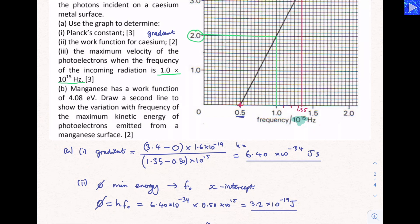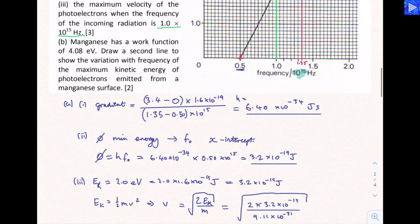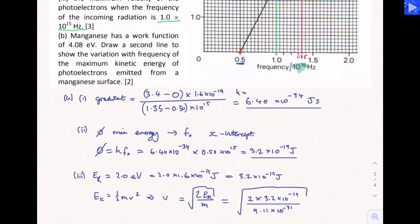We're now told that manganese has a work function of 4.08 eV. Draw a second line to show the variation with frequency of the maximum kinetic energy of photoelectrons emitted from a manganese surface. If you remember, the gradient of our line is Planck's constant. Planck's constant is, as the name suggests, constant. So the gradient of our line for manganese is going to have the same gradient as for cesium.